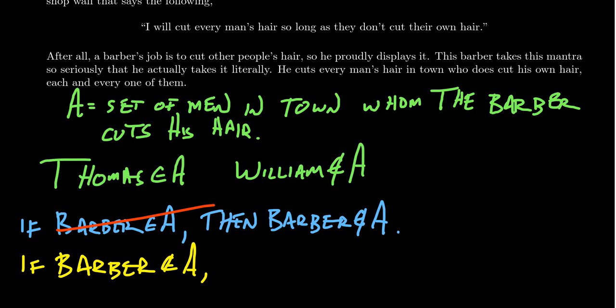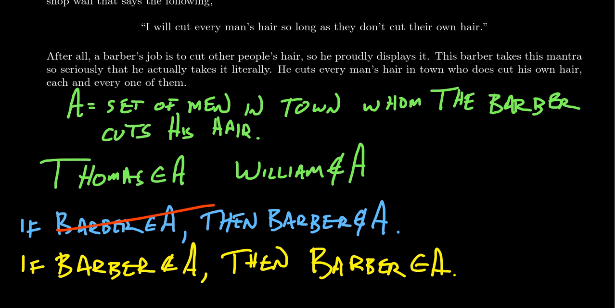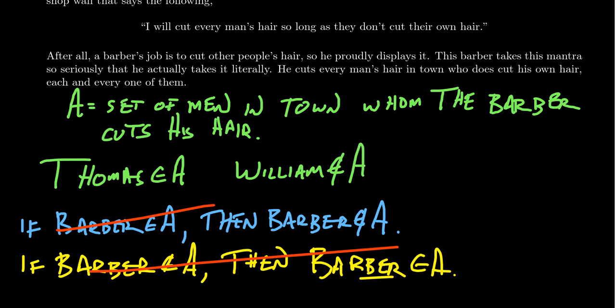But wait — if the barber doesn't belong to set A, that means the barber doesn't cut the barber's hair. But the barber is himself, so if the barber doesn't cut the barber's hair, that means the barber doesn't cut his own hair. He's a man in town who doesn't cut his own hair, and therefore the barber cuts the hair of every man in town who doesn't cut his own hair — so the barber cuts his own hair, and the barber should belong to A. How can the barber both belong to A and not belong to A? We get a contradiction in both situations.